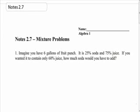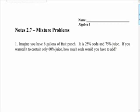Today we're going to learn another type of word problem that involves mixtures. It may appear at first that you want a calculator for some of these, but you're going to be fine. Number one says imagine you have six gallons of fruit punch, it's 25% soda and 75% juice.